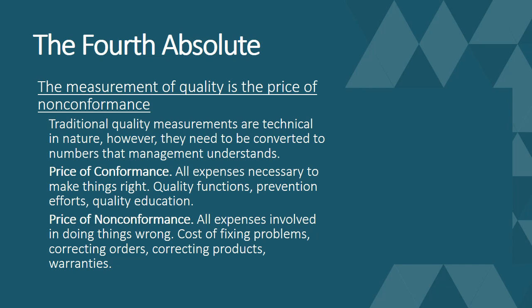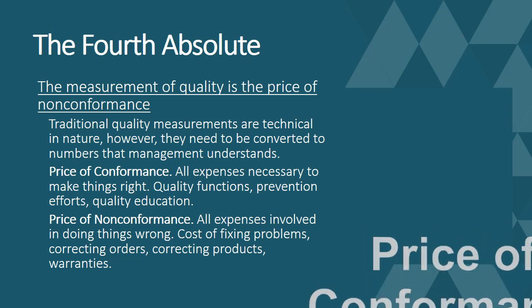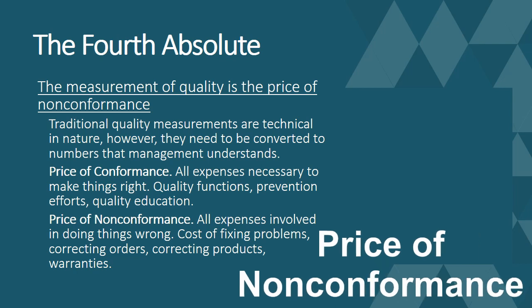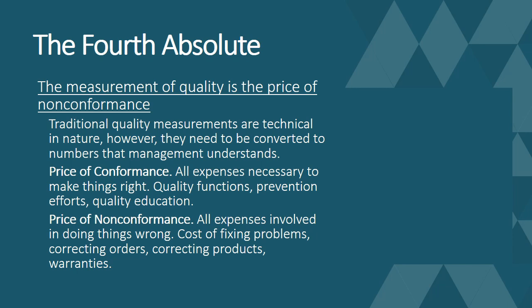Crosby defined two prices of quality. The first is the price of conformance — all the expenses you need to spend to make things right, including any training, prevention, or inspection you do. The second is the price of non-conformance — all the expenses related to doing things wrong: rejection, repair, rework, fixing problems, correcting orders, and warranties. This was the fourth and final absolute of quality proposed by Philip Crosby.